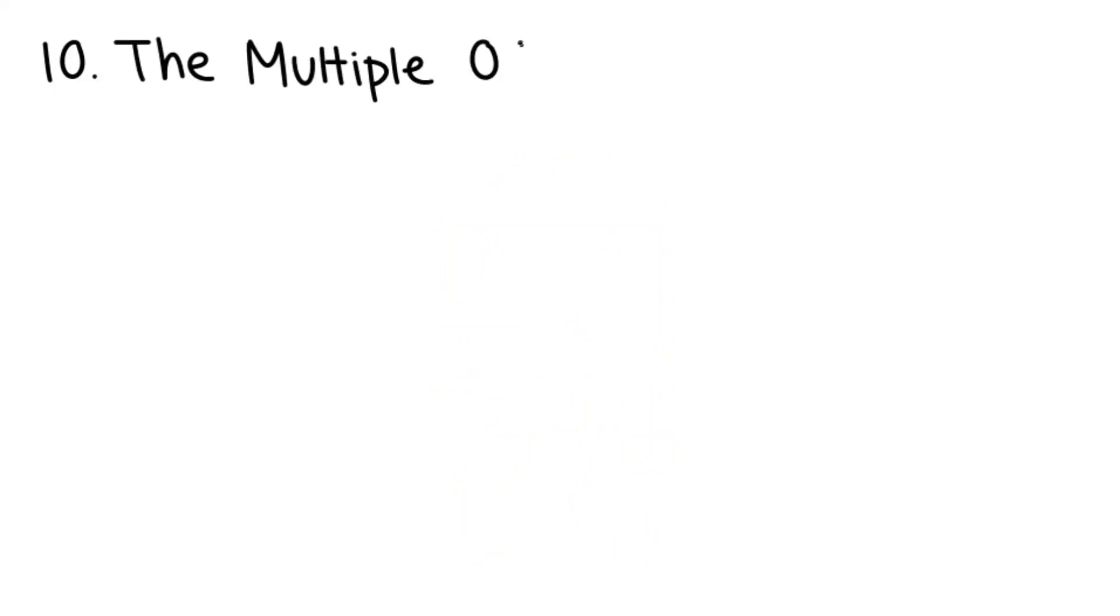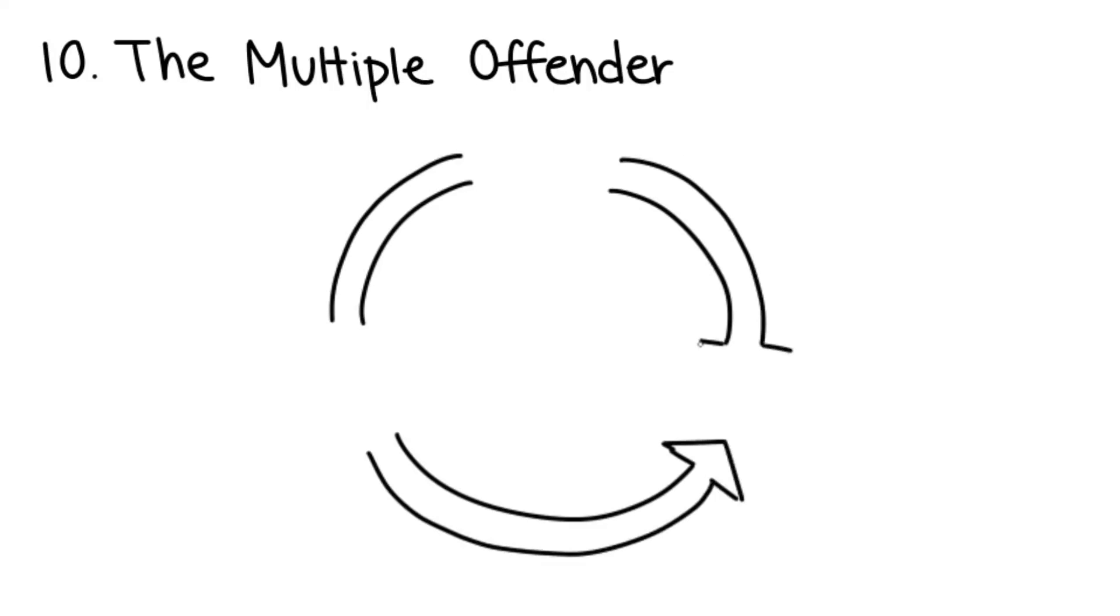10. The Multiple Offender. This person uses several of the techniques we've described, and they'll often switch between the methods depending on what suits their purposes.